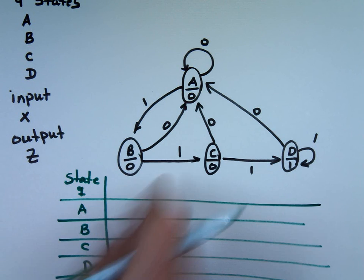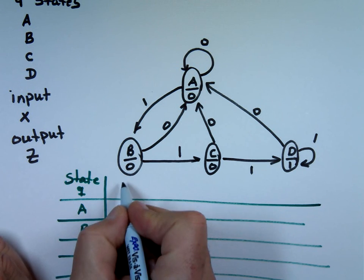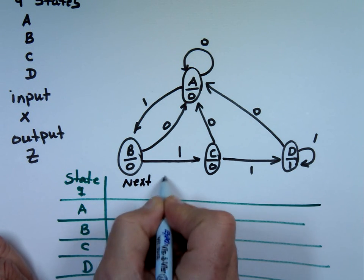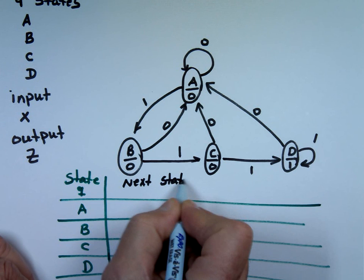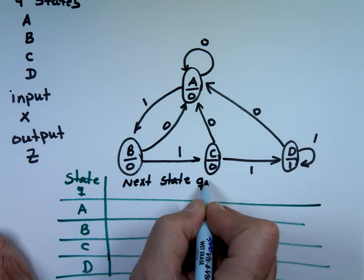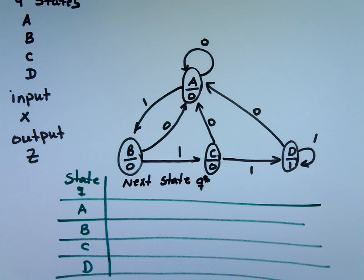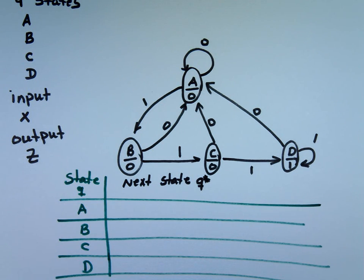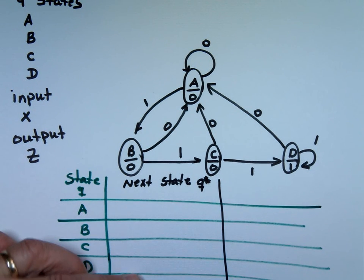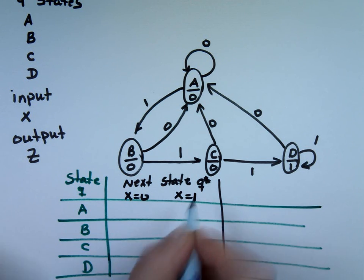X is my input. So I'm going to call this one next state, which is Q bar or asterisk, wherever you want to use it. We'll call it Q star. Next state. And the next state really depends on two things. It depends if X equals to 0 or if X equals to 1. Where are you going to go next?